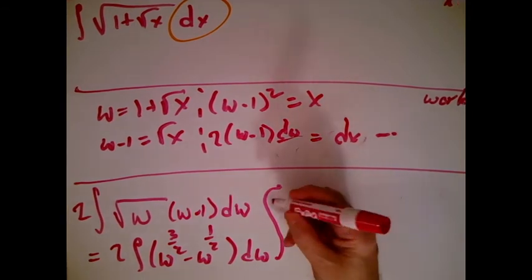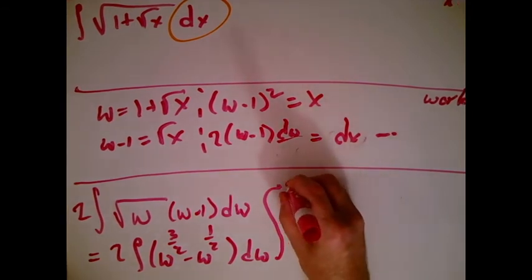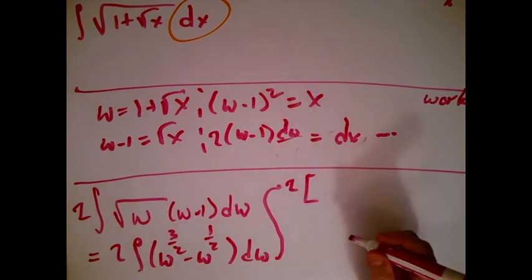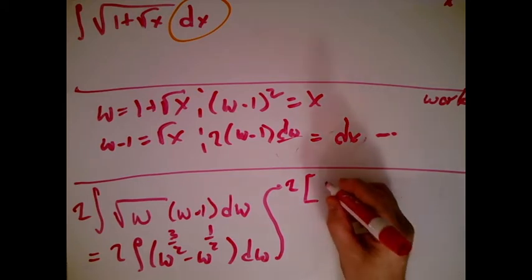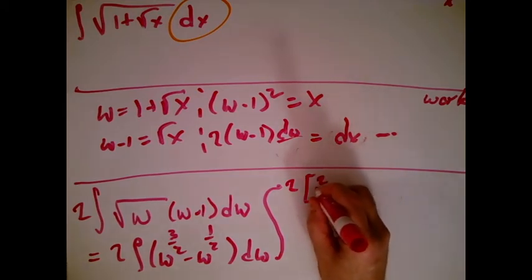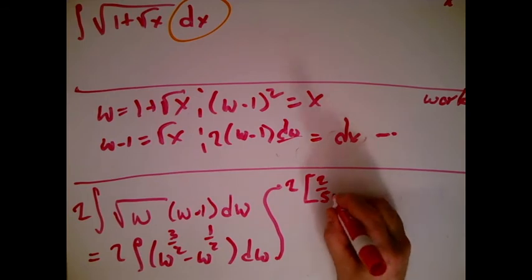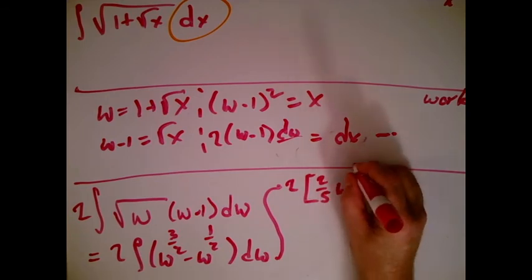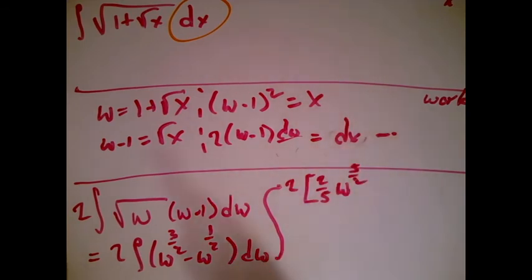The 2 goes along for the ride. Works with derivatives, works with anti-derivatives. I want the anti-derivative of w to the 3 halves. Well, it's a power function. I raise the power to 5 halves, I divide by 5 halves. I will usually write this as 2 to the 2 fifths times w to the 5 halves. You can see that when I take the derivative of that, I do get my w to the 3 halves.